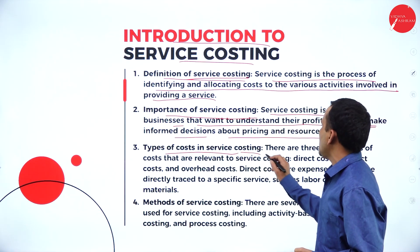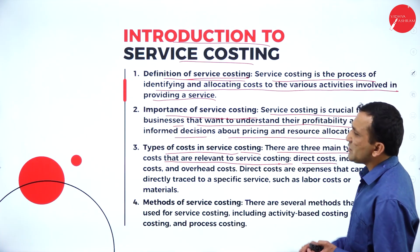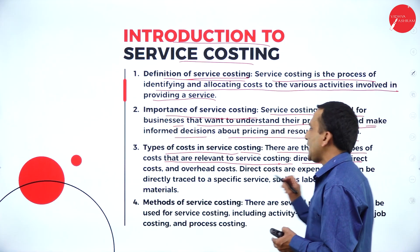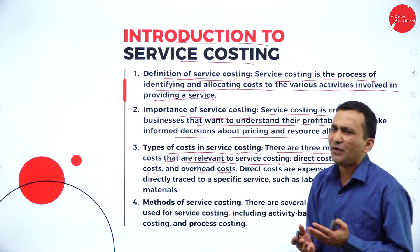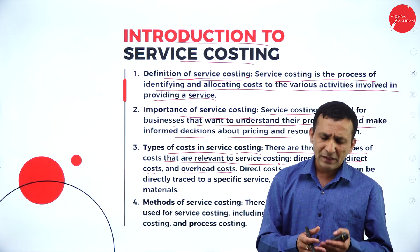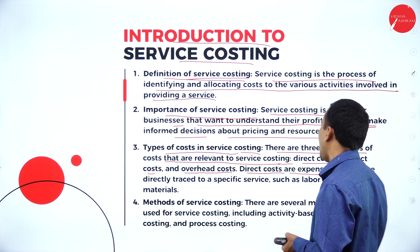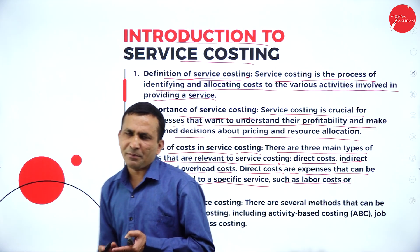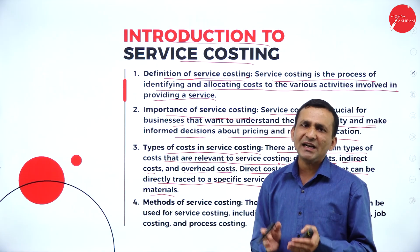The types of costs in service costing: there are three main types of costs relevant to service costing. One is direct cost — costs directly involved in preparing the service. Second is indirect cost, which we can call overheads. Third is other overhead costs. We need to identify direct cost, indirect cost, and overhead cost at the time of offering a service. Direct costs are expenses that can be directly traced to a specific service, such as labor cost or materials.